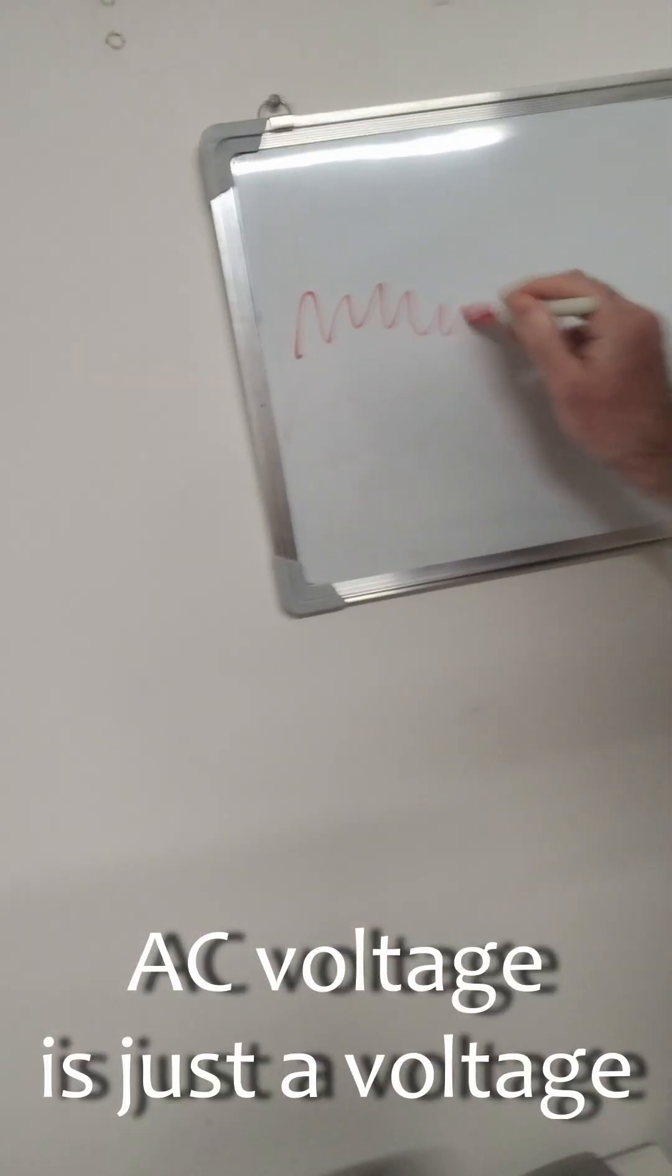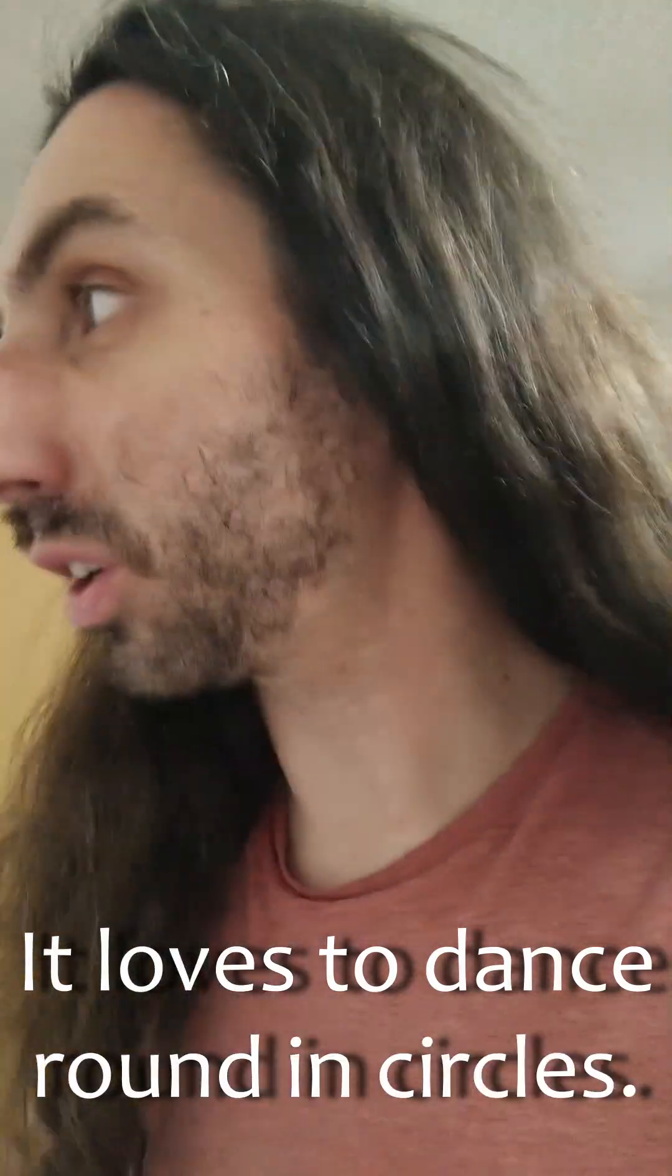So what is a ground loop? AC voltage is just a voltage that loves to dance. It loves to dance around in circles.